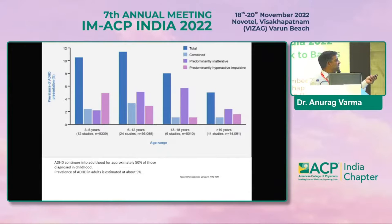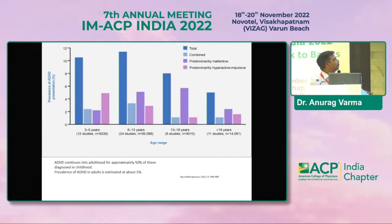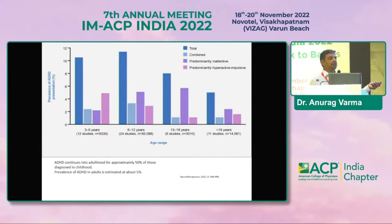If you can see in this chart, the combined and hyperactive type of ADHD predominates more in childhood. Later on, as we become adults, the inattentive type and the combined type of ADHD becomes more prominent. Overall, the incidence decreases, but around 5% of the adult population also keep complaining of symptoms of ADHD.